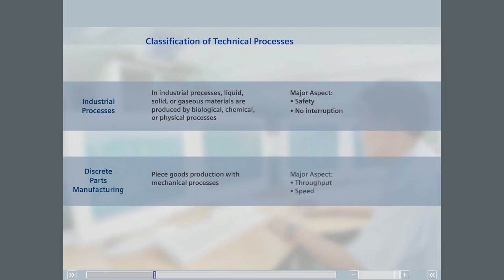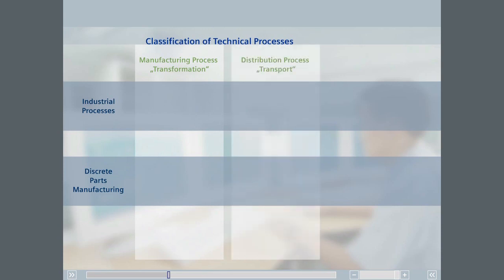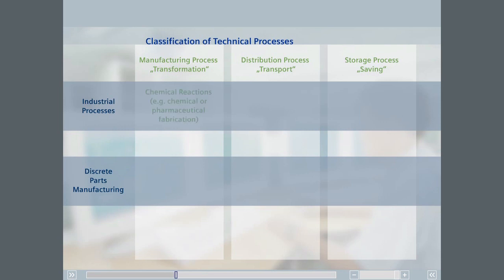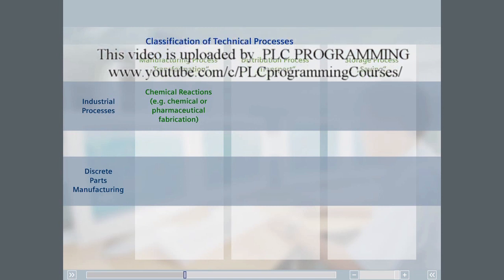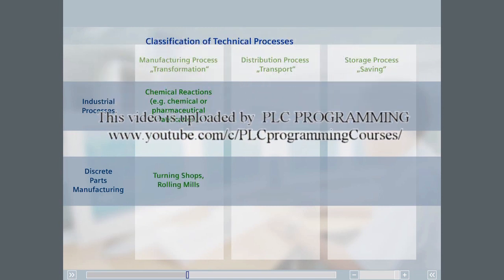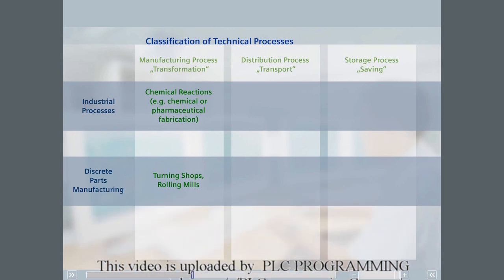The main emphasis in discrete parts manufacturing is on throughput and speed. Both types of process can be further divided into the categories of manufacturing processes, distribution processes, and storage processes. Processing in industrial processes includes, for example, chemical reactors as used in the chemical or pharmaceutical industries. Processing in discrete parts manufacturing can be found, for example, in turning shops or in rolling mills.